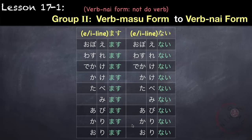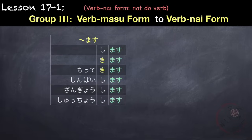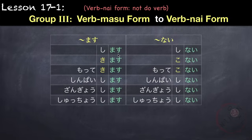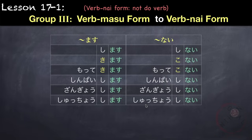For group three it is very similar to group two, but there are some exceptions. Shimasu becomes shinai — we just change masu to nai. But for kimasu, ki becomes ko, so kimasu becomes konai, and motte kimasu becomes motte konai. For verbs followed by shimasu, just change shimasu to shinai — for example, shimpai shimasu → shimpai shinai, zangyou shimasu → zangyou shinai, shuchou shimasu → shuchou shinai. Make sure to check the vocabulary list for the meanings.